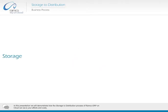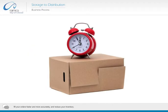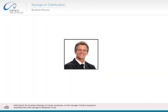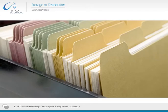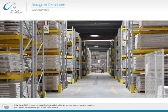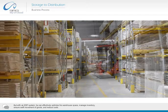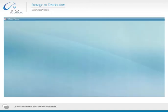Welcome to Ramco Systems. In this presentation, we will demonstrate how the storage to distribution process of Ramco ERP on cloud can save your efforts and costs, fill your orders faster and more accurately, and reduce your inventory. Meet David, the inventory manager of a large warehouse. As the manager, David is required to streamline the entire storage to distribution cycle. But with an ERP system, he can effectively optimize his warehouse space, manage inventory, ensure swift movement of goods, and reduce costs. Let's see how Ramco ERP on cloud helps David.